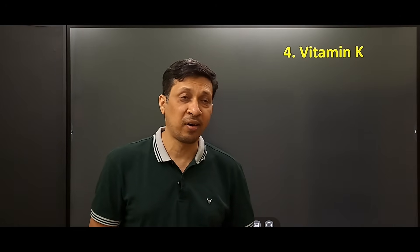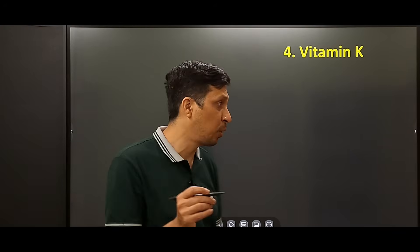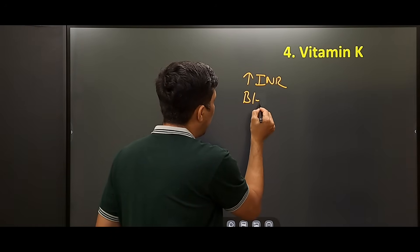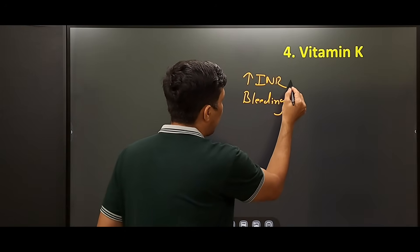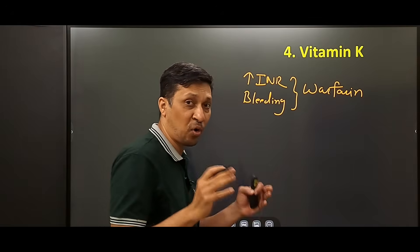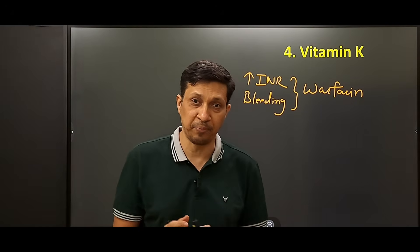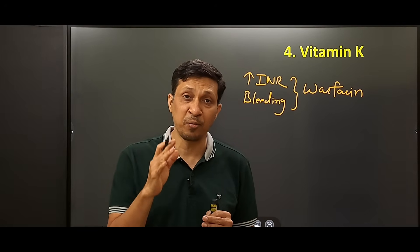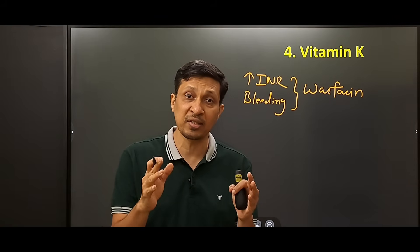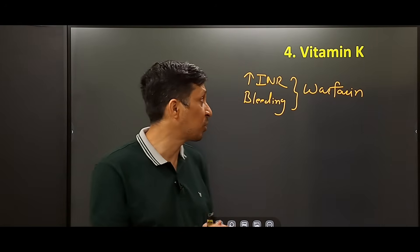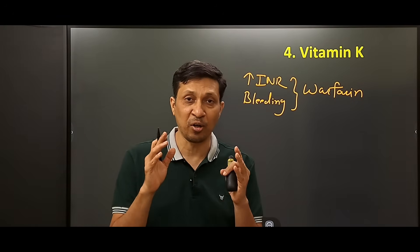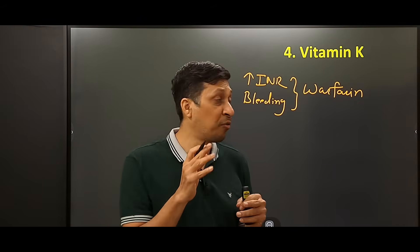The fourth antidote is Vitamin K, used when there is increased INR and/or bleeding in a patient on warfarin — that is, in warfarin overdose or toxicity. Warfarin-like compounds are also present in certain rodenticides, and if those poisons are consumed, Vitamin K can be used in those cases as well.